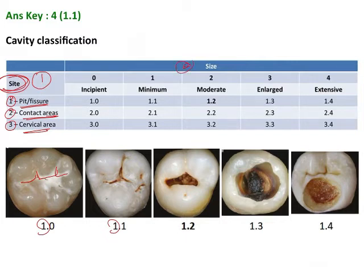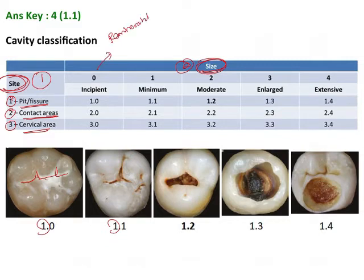The second digit denotes the size of the lesion, and that can be scored from zero to four. Zero is incipient — this means the initial stages of demineralization where remineralization of the enamel is still an option. These are the early stages where cavitation has not occurred yet.